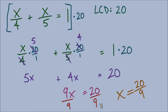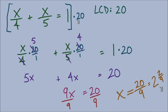20 over 9 won't divide evenly, so we keep it as a simplified fraction. Since this is a word problem about how many hours it will take, a mixed number is clearer. It's 2 and 2-ninths hours — so 2 hours and 2-ninths of an hour.